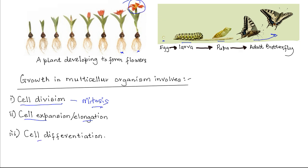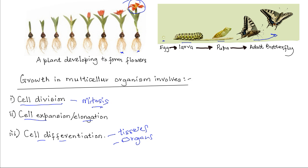The third phase is cell differentiation — the structural modification leading to formation of tissues, cells, and organs. The cells become modified so that they can perform specific functions. Growth and change occur at the cellular level in terms of numbers, which then lead to growth and change at the tissue and organ levels, and hence growth and change in the overall form, shape, and structure of a multicellular organism.